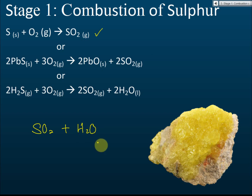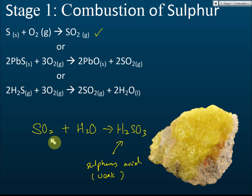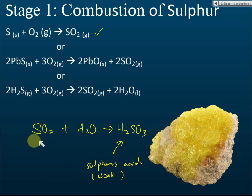If you dissolve sulfur dioxide in water, you get sulfurous acid, H₂SO₃, which is a weak acid and not very useful. However, sulfur dioxide released into the surroundings can dissolve in rainwater to form sulfurous acid, contributing to acid rain. In industry, this is a problem we want to avoid.